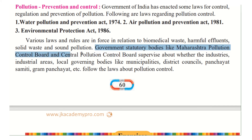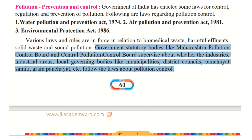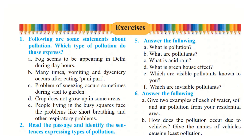Government statutory bodies like the Maharashtra Pollution Control Board and the Central Pollution Control Board supervise — meaning they check — whether industries, industrial areas, and local governing bodies like municipalities, district councils, panchayat samiti, and gram panchayat follow the rules about pollution control. The government keeps a keen watch to ensure these acts are followed, which helps save the environment and indirectly saves ourselves.